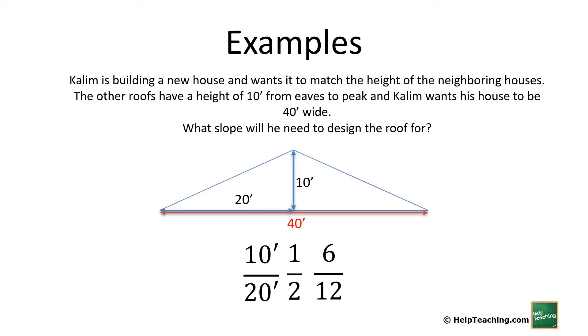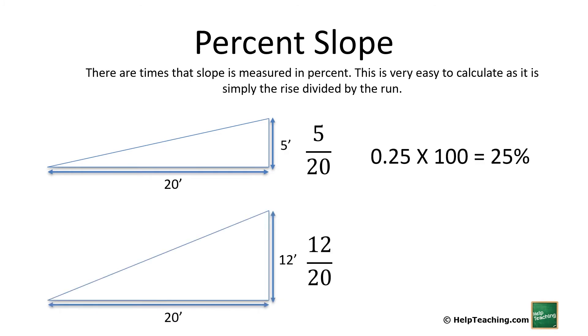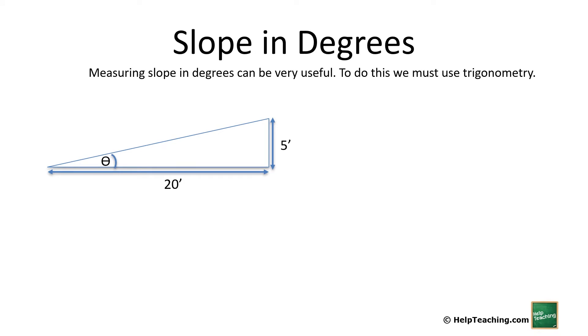Sometimes the slope is referred to as percent. We just look at our ratio of rise to run: 5 to 20, 5 divided by 20 is 0.25 times 100 is 25 percent. In this example a rise of 12 to a run of 20, 12 divided by 20 is 0.6 times 100 is 60 percent. That's all there is to calculating slope, slope as a percent. What is more common is slope in degrees.